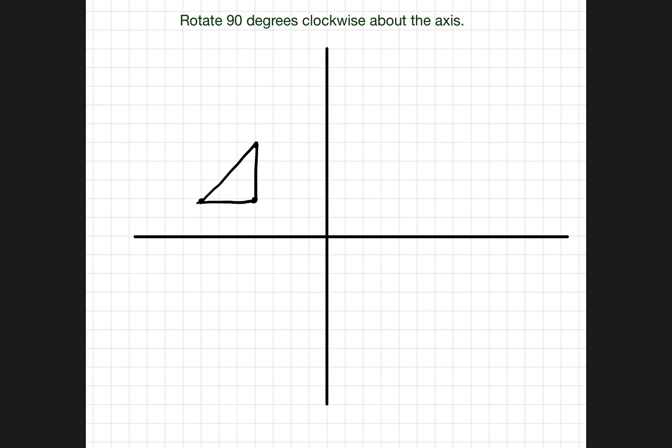On your test, you may see a question that has a shape on top of a graph, and they're telling you to take that shape and rotate it 90 degrees clockwise about the axis. That can seem a little bit confusing, so what I want to do today in this video is break this question down so that you feel more confident when you have this on one of your tests.